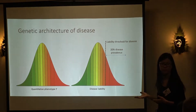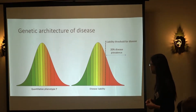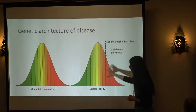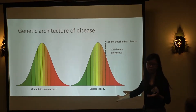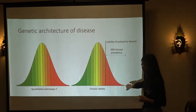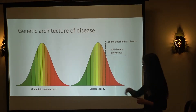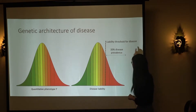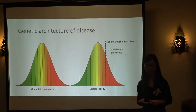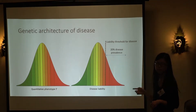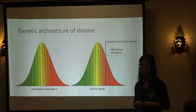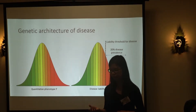We can express disease liability in the same way as a quantitative phenotype — with variance contributed by genetic and environmental components. We draw a threshold such that people above a particular liability are cases and everyone else are controls. This is called the liability threshold, defined by the prevalence of the disease in the population, which is obtained from epidemiological studies.